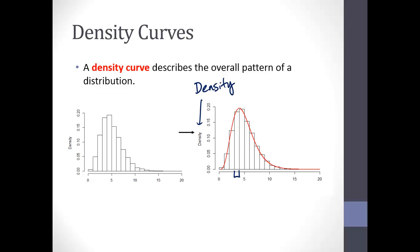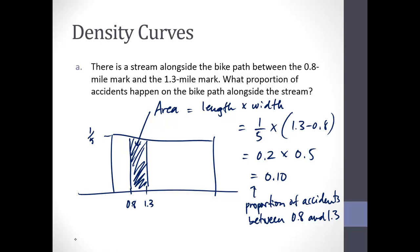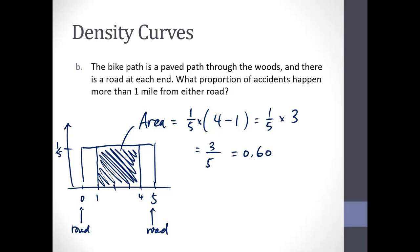Do we always want to answer with decimals for proportions? When you're giving a proportion it should always be between 0 and 1, so it should always be a decimal or a fraction. You can use three-fifths or 0.6 — whichever you prefer is fine. The main idea here is that if we're talking about a proportion, we want to find the area. That's the parallel we're drawing — just keep that in mind as we move forward.